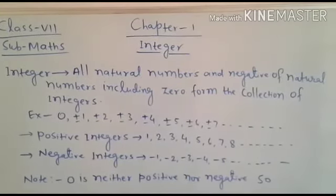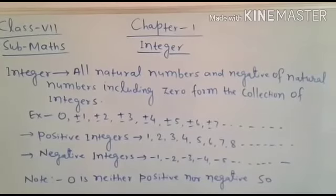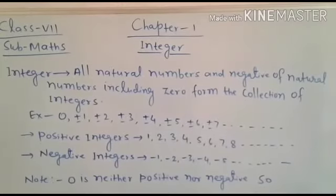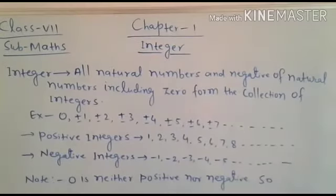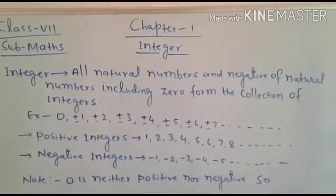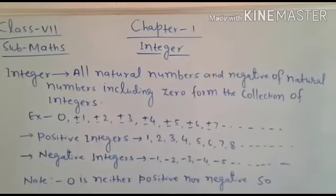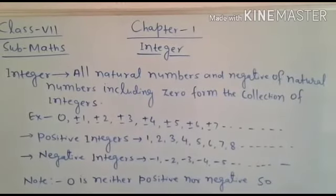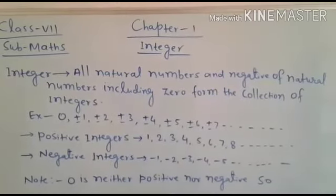So a natural number is a counting number. It means counting numbers are one, two, three, four, five, six, seven and so on.